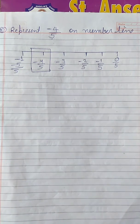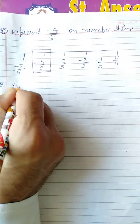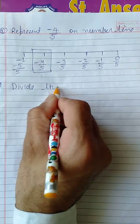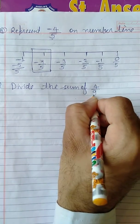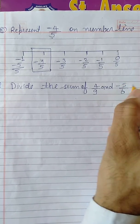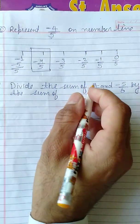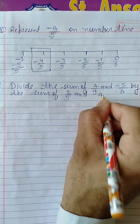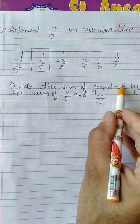The next question I'm taking is a word problem. The word problem is: divide the sum of four upon nine and minus five upon six by the sum of two upon five and four upon three.